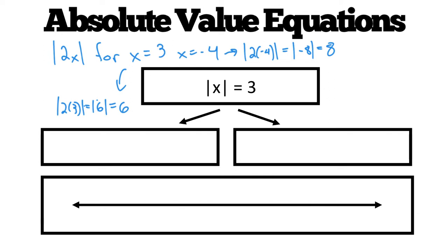So with this equation, absolute value of x equals 3, what it's asking is what numbers have a distance from 0 of 3. So the two numbers that do that are negative 3 and positive 3.